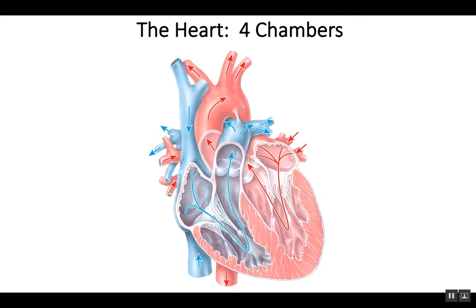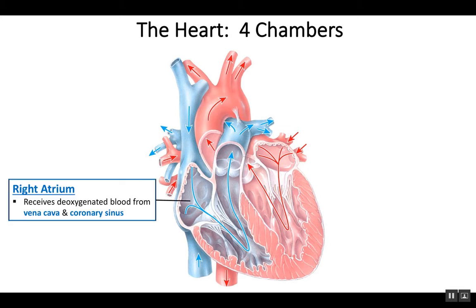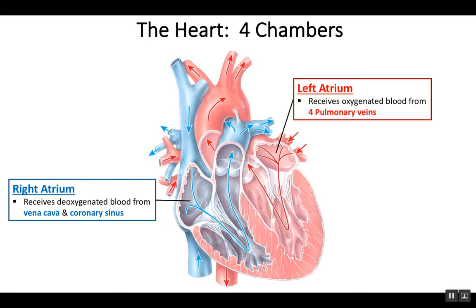Let's take a look at the four chambers. The atria represent the two chambers that receive blood. An atrium is a room that receives people — if you think about a building, when you walk in, you often walk into the atrium. Same is true for the heart: blood enters the heart by going into either the right atrium or the left atrium.